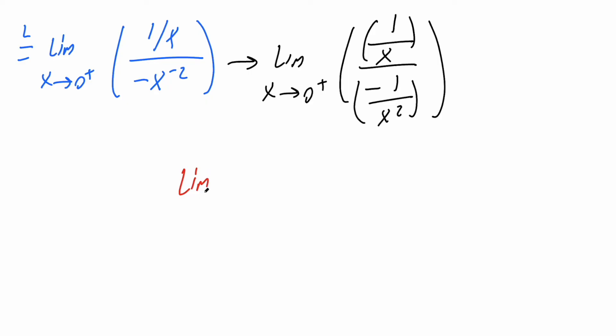And so now we can rewrite again. So we have the limit as x approaches zero to the right, and we have one divided by x. So one divided by x times we can flip this, and we can say we have negative x squared divided by one. And again, this and this is equivalent. So this x would cancel with this piece. And what we have left is the limit as x approaches zero to the right for negative x.